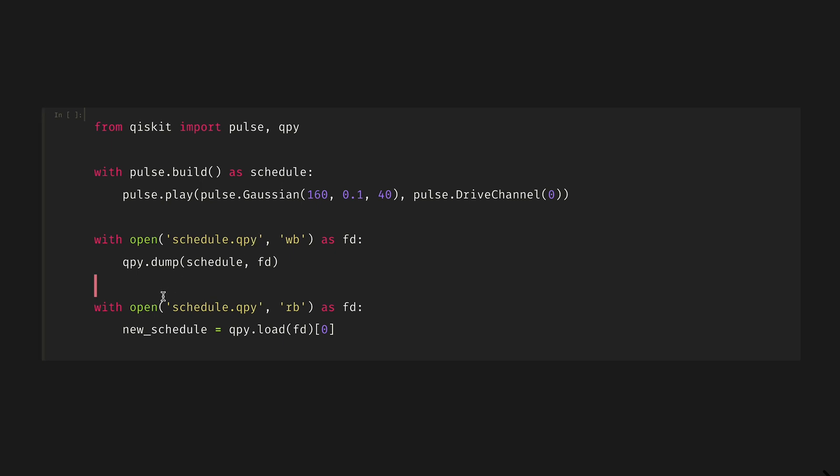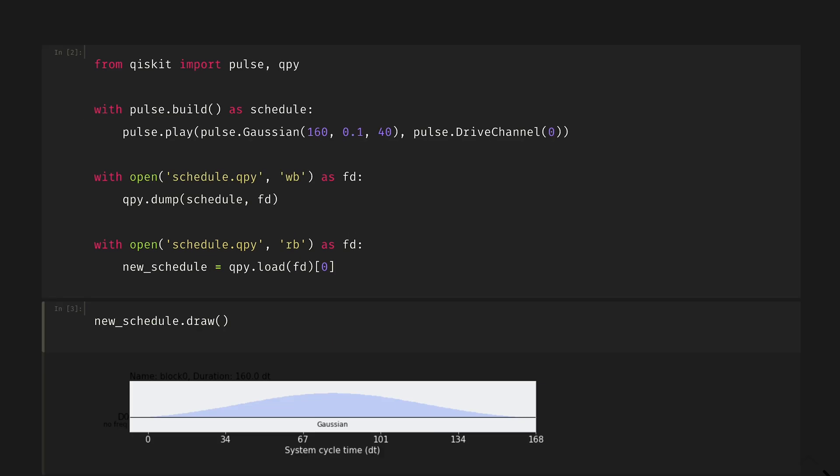We can open that file back up, get our new schedule out of the saved file, and show that we displayed the same Gaussian that we intended to show before.